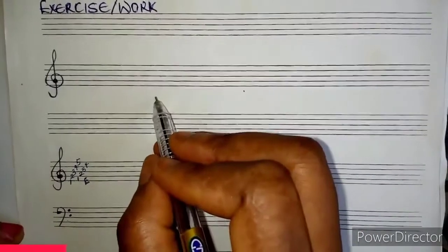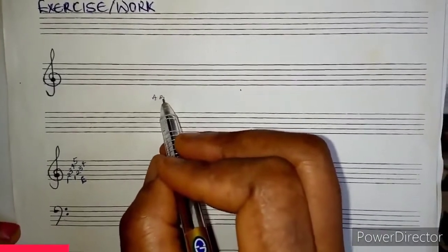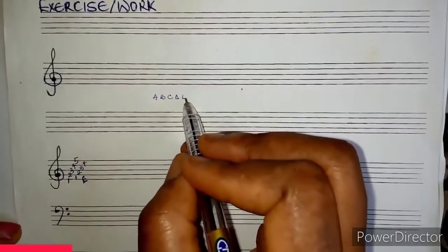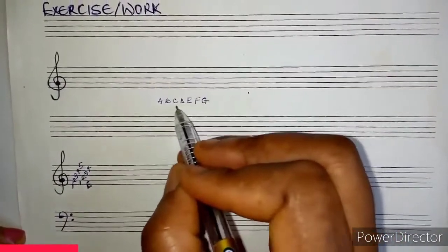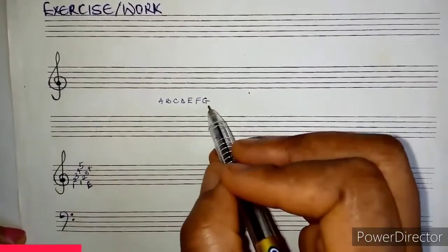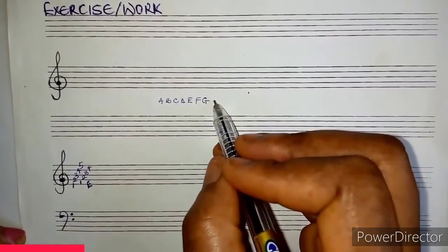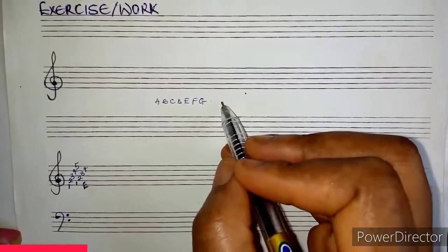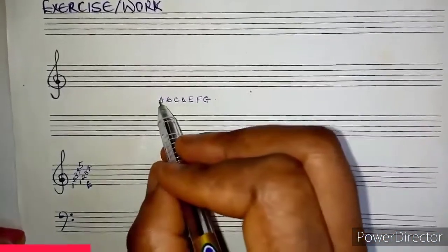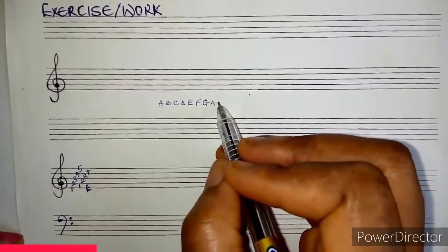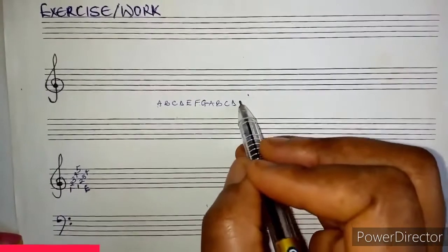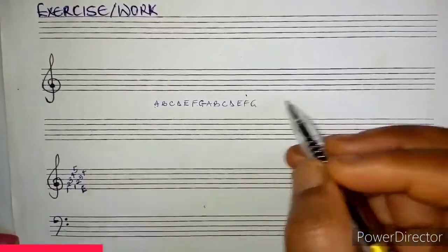The first line on the treble staff is letter E. In music we have letters A-B-C-D-E-F and G. These are the seven letters we use in music. We don't have S, K, W, or Z. We only make use of A to G. When you get to G you go back again to A-B-C-D-E-F, and that's how you keep building.